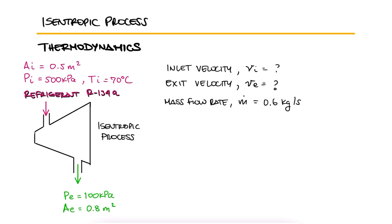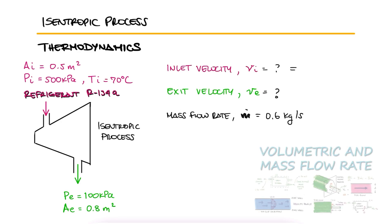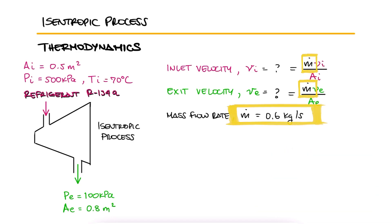The velocities at the inlet and at the exit can be found using the expression we derived in the volumetric and mass flow rates 8-minute lecture video, link below. We have the mass flow rate and we have the areas for both the inlet and the exit. This means that what we have to find is the specific volume at the inlet and at the exit.